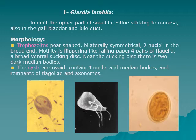The four pairs of flagella are attached at certain places in the body of the trophozoite cell. There are also two dark median bodies near the sucking disc.